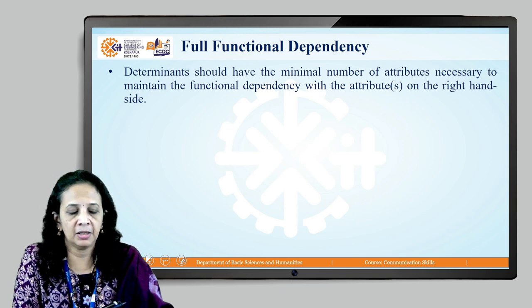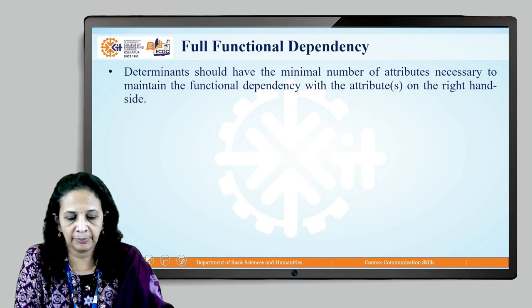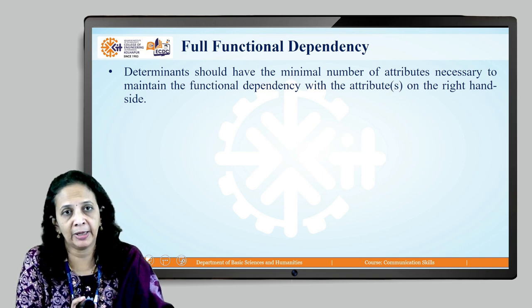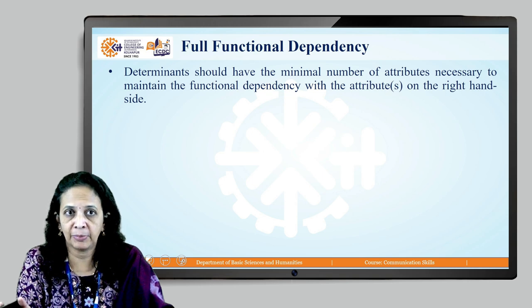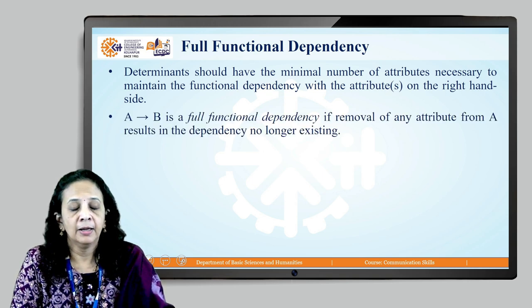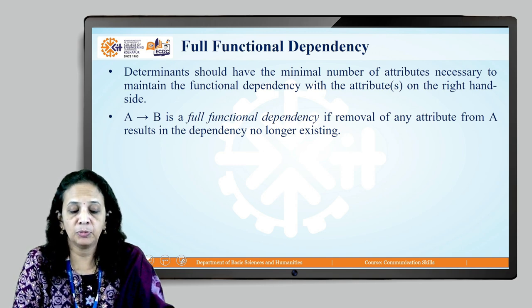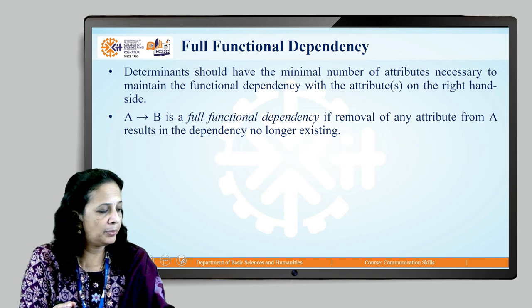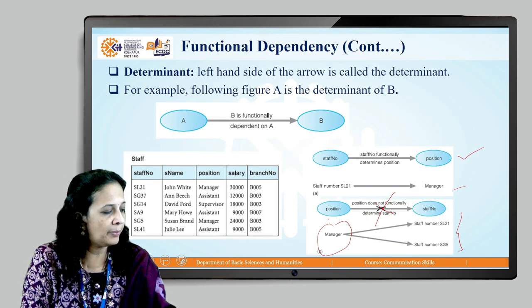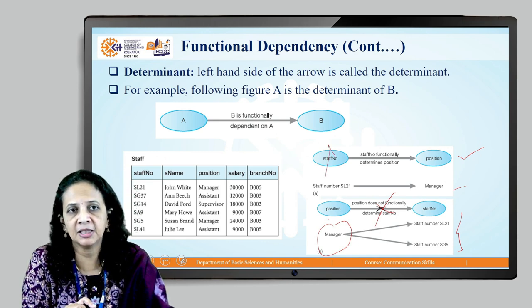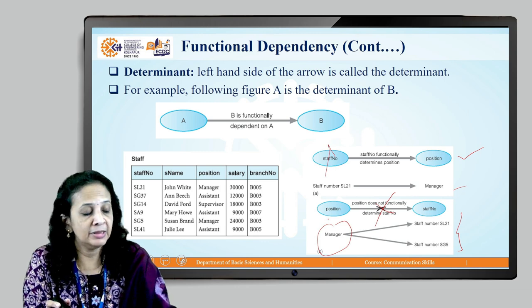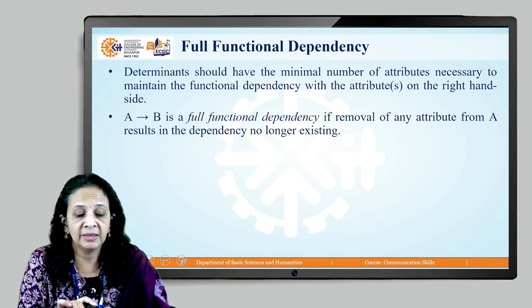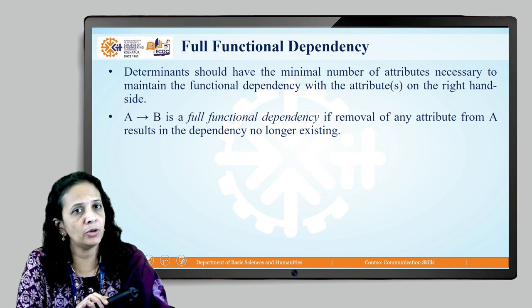The determinant should have the minimal number of attributes necessary to maintain the functional dependency with the attributes on the right-hand side. A → B is a full functional dependency if removal of any attribute from A results in the dependency no longer existing. If there is a single attribute on the left-hand side and it is removed, the functional dependency no longer holds.